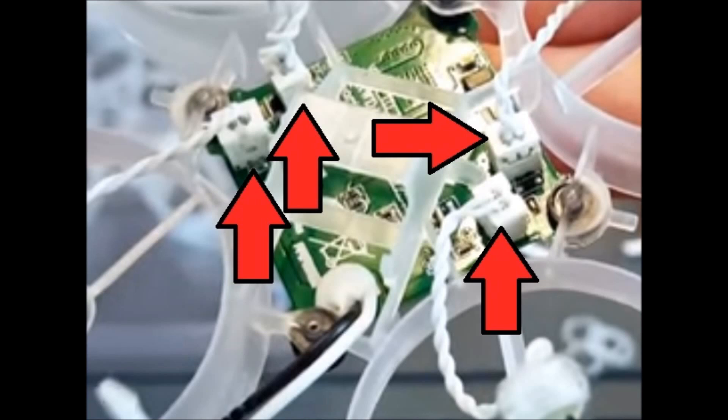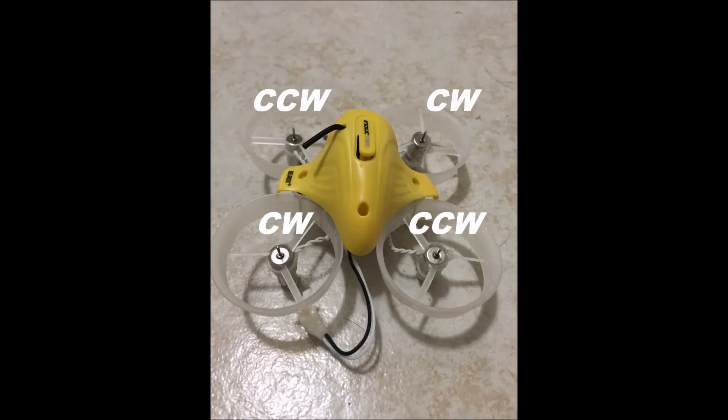So disconnect each one of your motors from the main board, but don't remove them just yet from the frame. By leaving them in, it's easier to ensure that you don't mess up the direction. Remember when this helicopter is facing away from you, the top left and bottom right motors are your counterclockwise ones and your top right and bottom left are the clockwise ones.